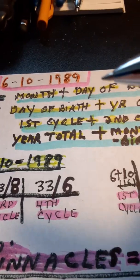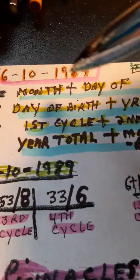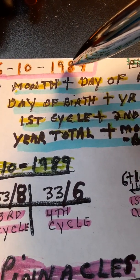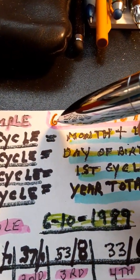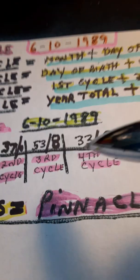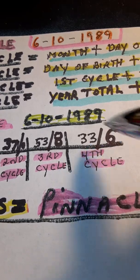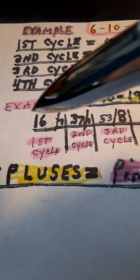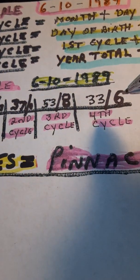Now the fourth cycle is derived by the total of the year and the month combined. So the year is 19, 27, 10, 18, 27, and the month is 6, is 33. So the last cycle is 33, 6. We reduce them by addition. 3 and 3 is 6. So the first pinnacle is 7, the second is 1, the third is 8, and the fourth is 6.